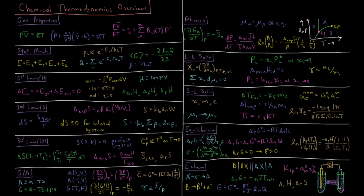We can calculate the change in Gibbs energy as we change the pressure of a gas, or use a more advanced metric for real gases called the fugacity: the standard Gibbs energy plus RT times the log of fugacity. We can calculate how the Gibbs energy changes with respect to temperature, or how Gibbs energy divided by temperature changes with respect to temperature — which is the negative enthalpy divided by T squared — the Gibbs-Helmholtz equation. We also define the fugacity coefficient, which is fugacity divided by pressure, equal to 1 for ideal gases.